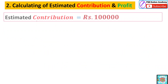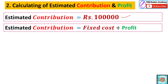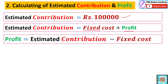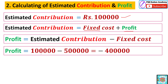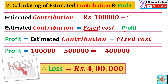To find out profit, use the formula: fixed cost plus profit equals estimated contribution, so profit equals estimated contribution minus fixed cost. That is 1 lakh minus 5 lakh, which equals minus 4 lakh. The minus symbol indicates a loss — there is a loss of rupees 4 lakh for the sales of 1,20,000.